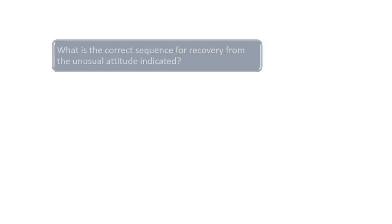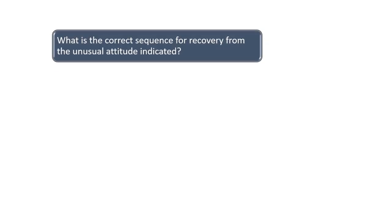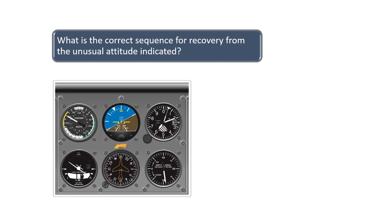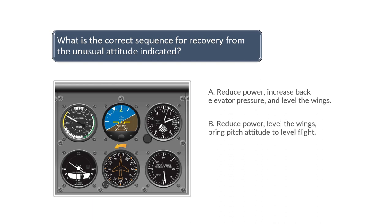What is the correct sequence for recovery from the unusual attitude indicated? The flight instruments are showing the airplane in a descending right turn. The vertical speed indicator is showing a descent rate greater than 1000 feet per minute and the altimeter would indicate a rapid drop in altitude. Since the airspeed indicator is showing a high airspeed...